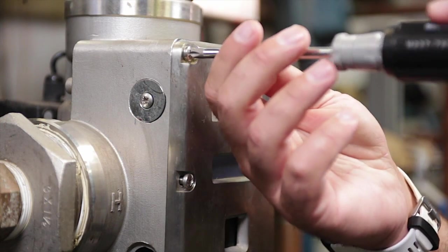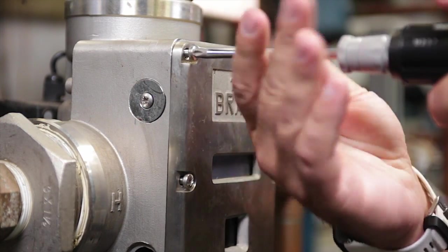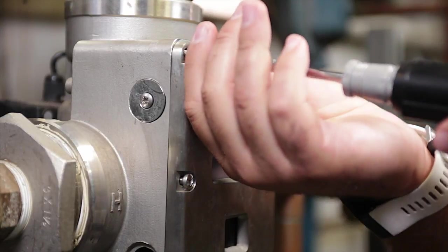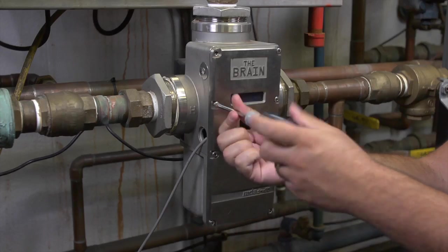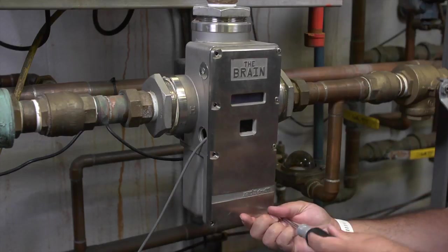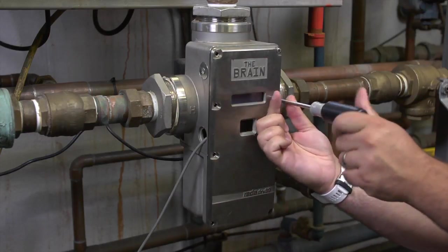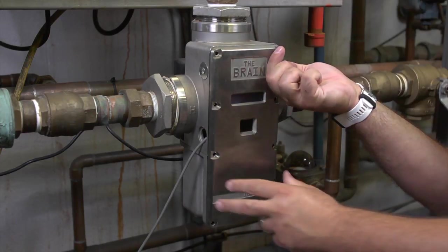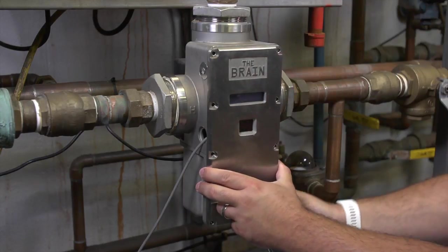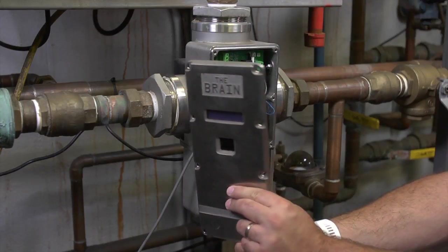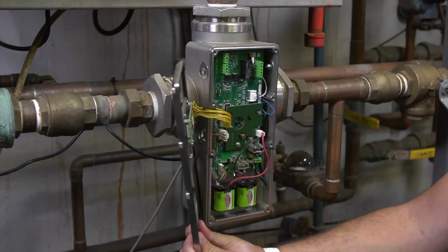With a Phillips head screwdriver, remove all eight cover screws, making sure the cover is constantly supported as it is heavy. With the screws removed, carefully remove the cover and disconnect the display cable.